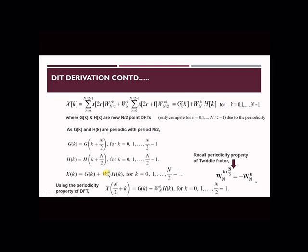Ultimately, this w raised to k becomes k plus n by 2. And according to the periodicity property of twiddle factor, it is equivalent to writing minus w raised to k to the base n. Hence, we get a new relation to compute higher order index of x of k as g of k minus w raised to k to the base n into h of k.